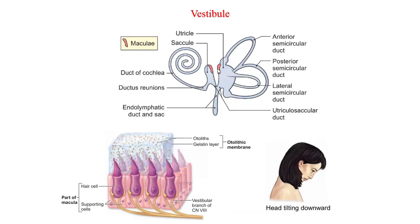The medial walls of the saccule and utricle are thickened to form a macula in each chamber. The maculae are end organs that give information about the position of the head — they are static balance receptors, supplied by peripheral processes of neurons in the vestibular ganglion. Both the utricle and saccule contain receptors sensitive to gravity and the tilting of the head in the horizontal plane. The saccule is stimulated by vertical linear motions, for example going in a lift. The utricle is stimulated by horizontal linear motion, for example going in a car.